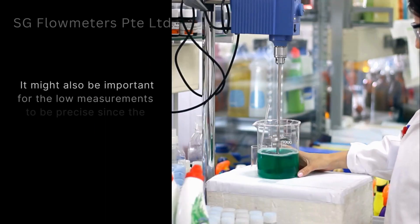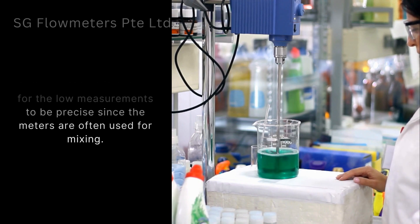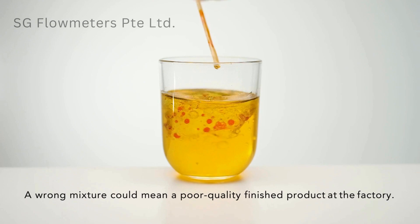It might also be important for the low measurements to be precise since the meters are often used for mixing. A wrong mixture could mean a poor quality finished product at the factory.